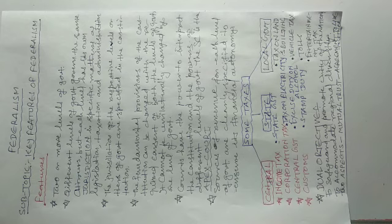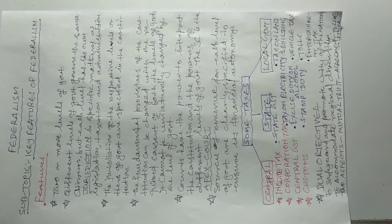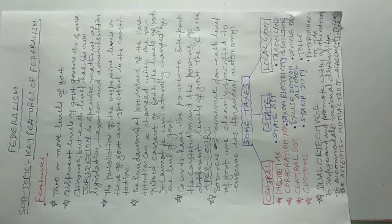Federalism is a type of government in which there are two or more than two levels of government. For example, in India the governments are of two levels: first is the national government, government of India, union government, central government, and the second level is the state governments or the provincial governments. But in 1992, with the 73rd amendment and introduction of the local self-government system in India, a third level of government was also added. So, coming on to the key features of Federalism.